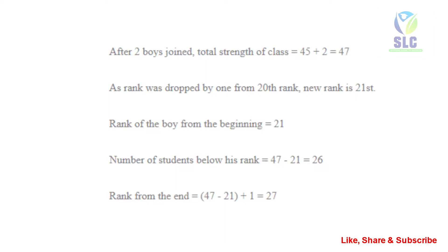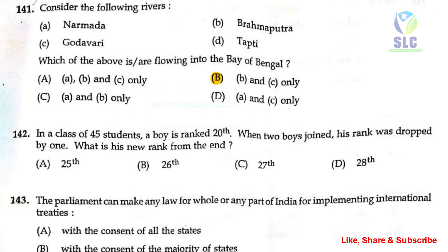The number of students below his rank: total strength is 47, rank from the beginning is 21, so 47 minus 21 equals 26. The rank from the end is 47 minus 21 plus 1 equal to 27. The correct answer for this question is option C — 27th rank is the new rank from the end.